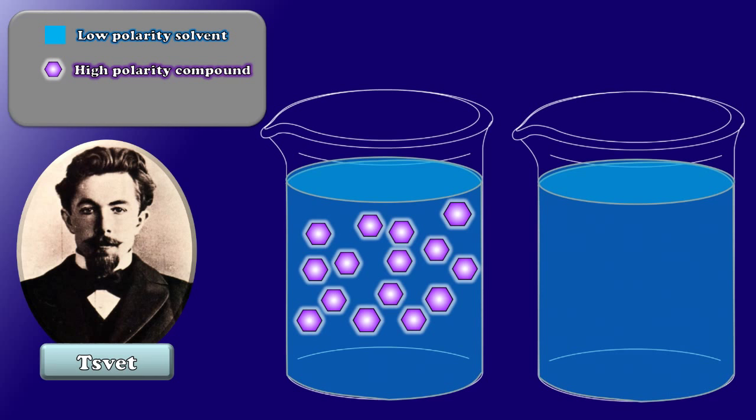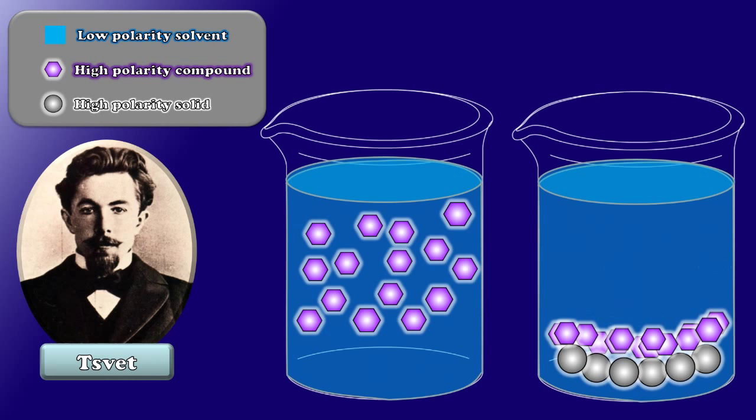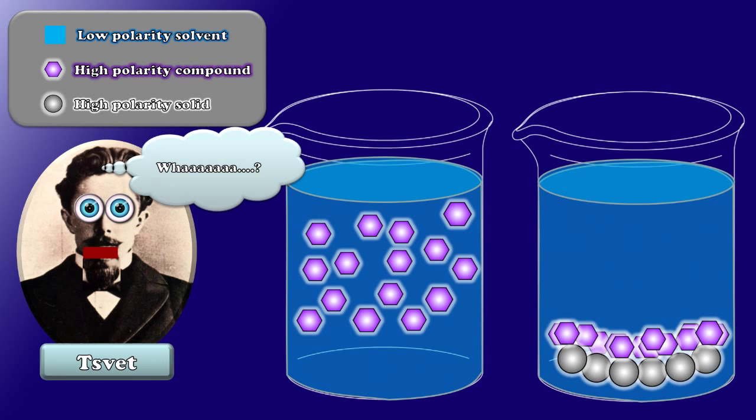But he noted that when he added one more thing to the system, things changed. He added insoluble plant material like cellulose fibers. And when he did that, he noted that the solubility of the compounds that he was working with changed drastically. This is a very interesting observation.